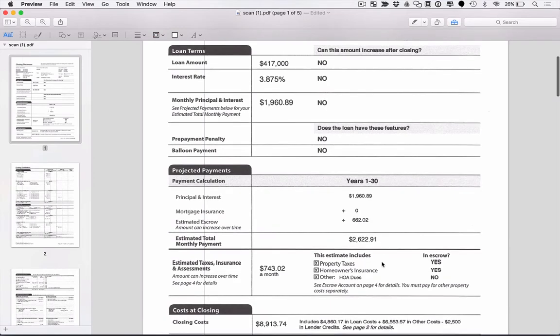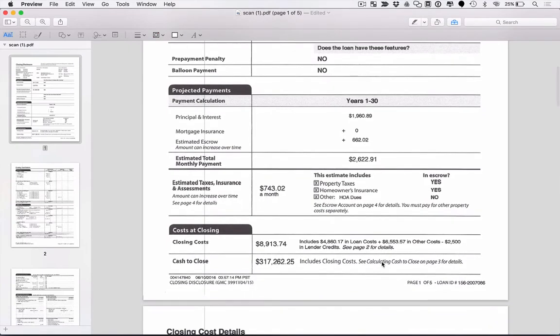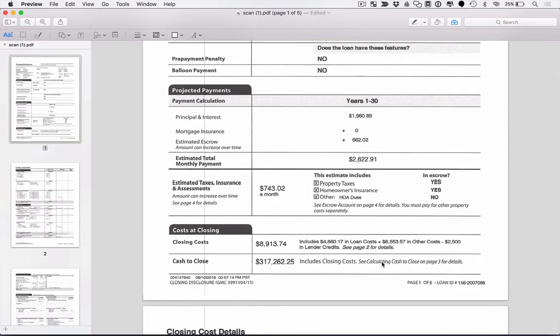Now, the next thing, which is the topic of this conversation, are the two items closing costs and cash to close. So we have closing costs of $8,913 for this file, which includes $4,860 in loan costs, $6,553 in other costs, which we will go over. Some are prepaid, some are one time. And then we got a $2,500 lender credit.